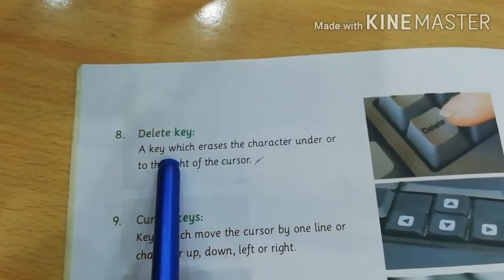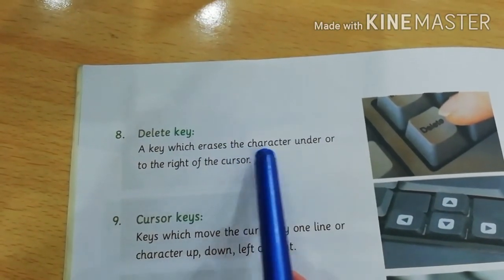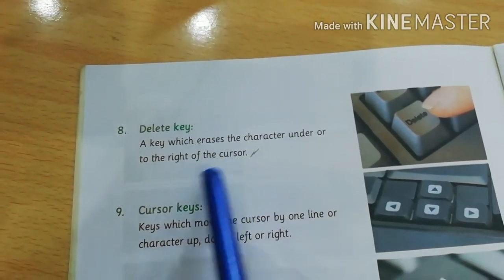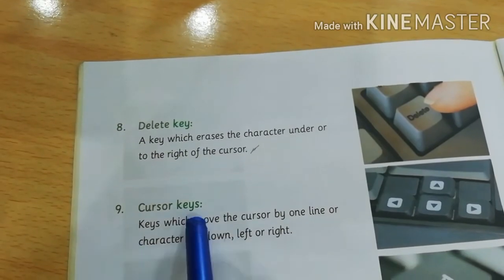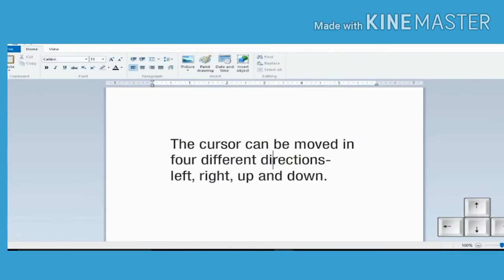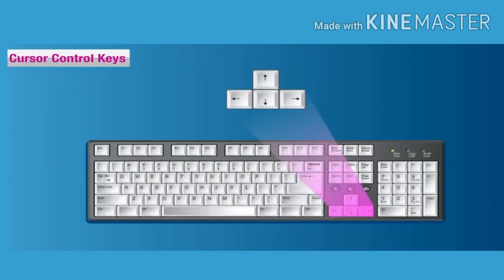Next key is cursor control keys. Cursor keys are used for moving the cursor on the monitor. The cursor can be moved in four different directions: left, right, up, and down. The four keys are marked with arrows indicating the direction in which the cursor moves when the key is pressed.